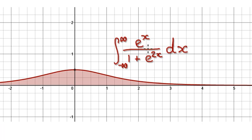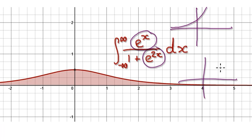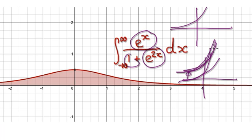Before I ask you to press pause and have a go, let me just show you why this is an even function. If you look at it, e to the power of x looks like this, and e to the power of 2x would be a lot steeper. But then you plus 1, so you move everything up by 1. So let's just say this here is 1 plus e to the power of 2x.